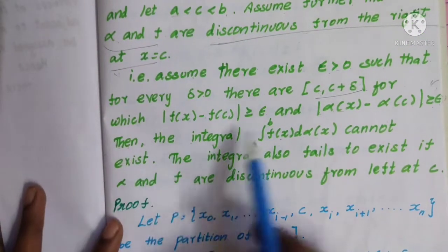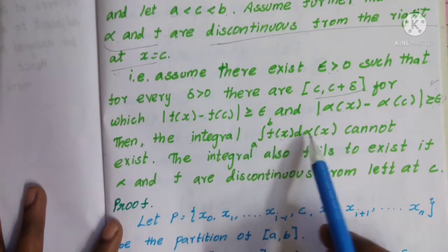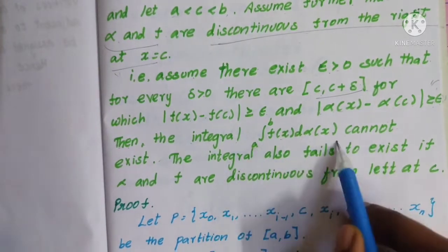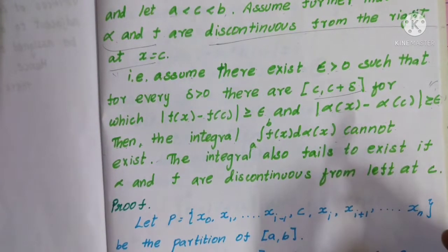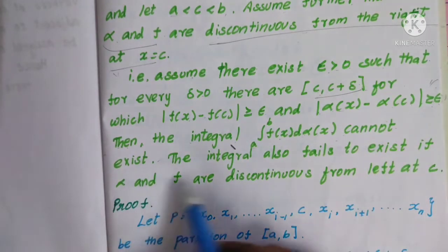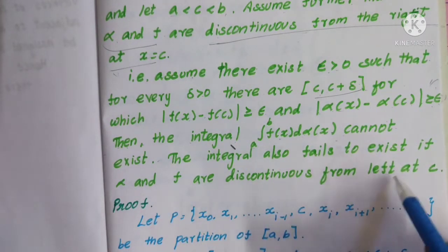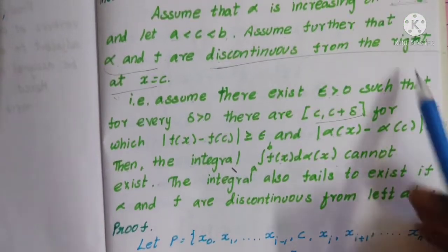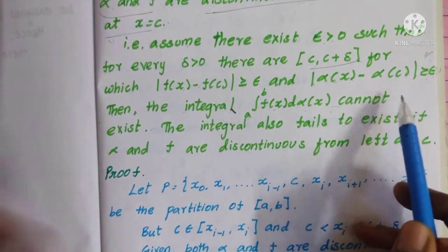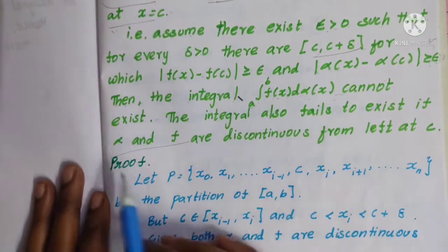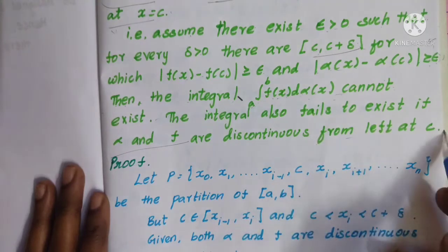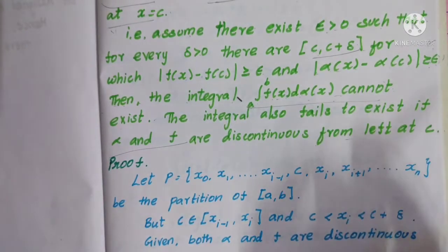Then we will prove that the integral ∫_a^b f(x) dα(x) cannot exist. So if alpha and f are discontinuous from the right at c, we will prove the integral also fails to exist.